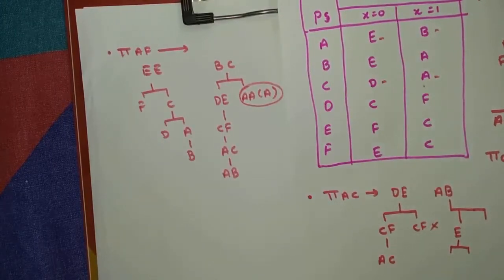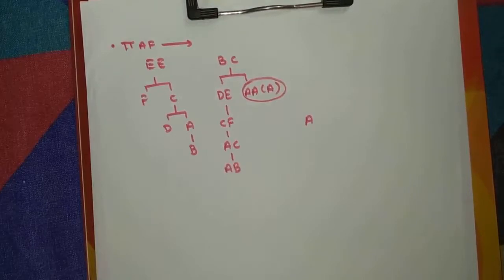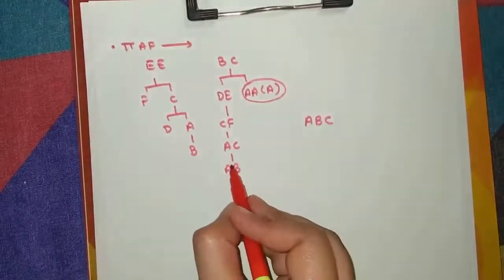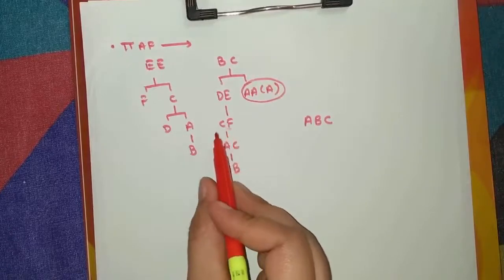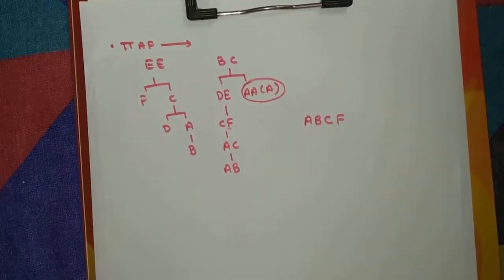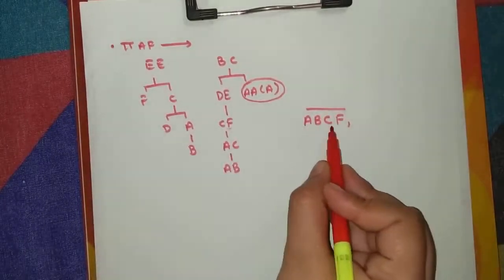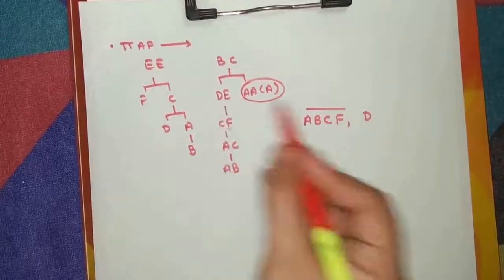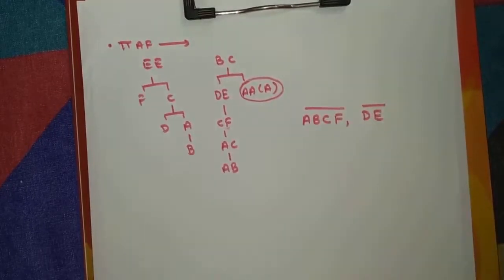Now we complete the partitioning for pi(AF). Write the first variable A — A is present with B and also with C. Check if A, B, or C are present with any other variable — yes, C is present with F. Check A, B, C, or F with any other variable — no, so stop and make a partition {A, B, C, F}. Next state is D — D is present with E. So we make another partition {D, E}. This gives us pi_2: {ABCF | DE}.